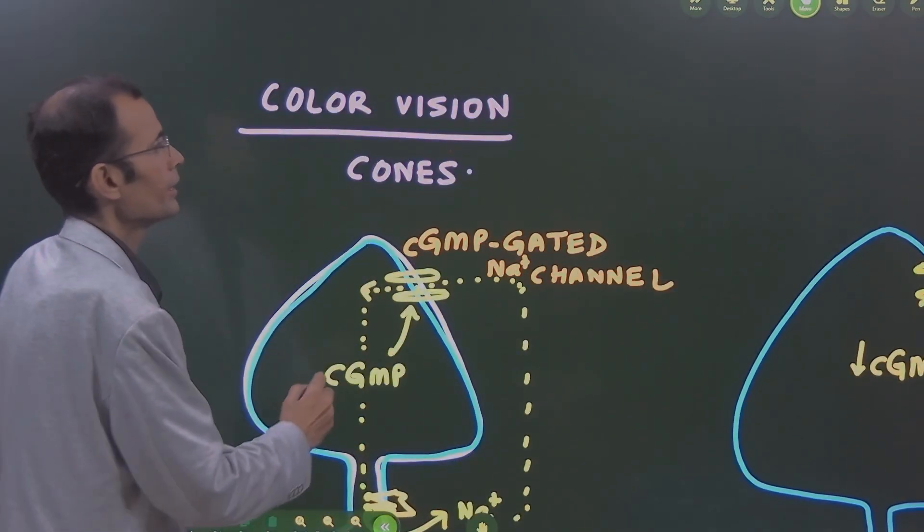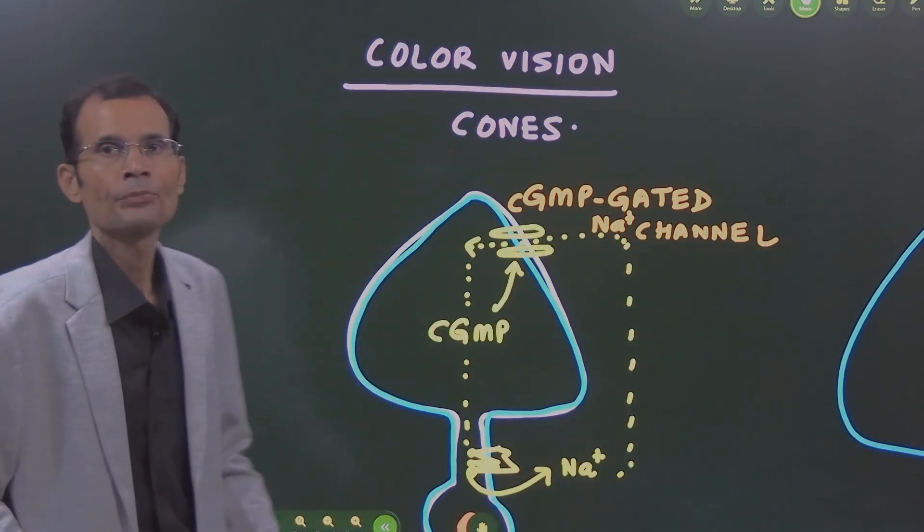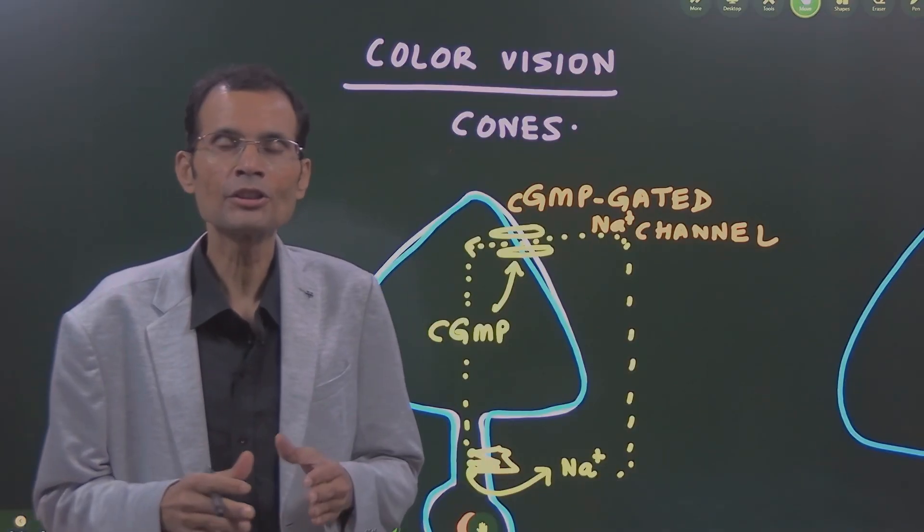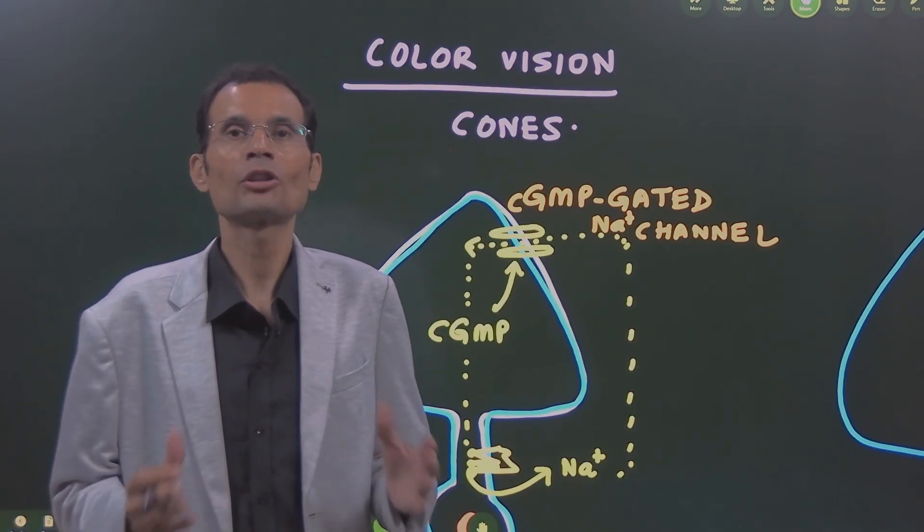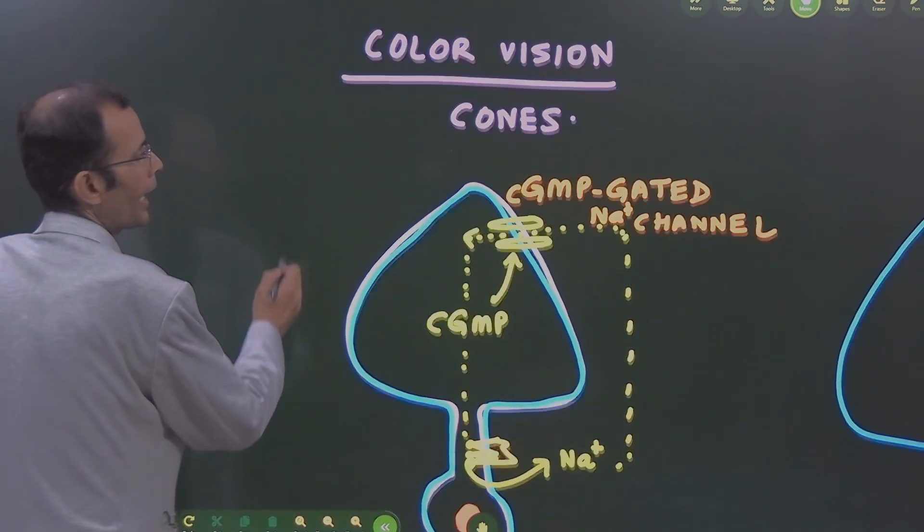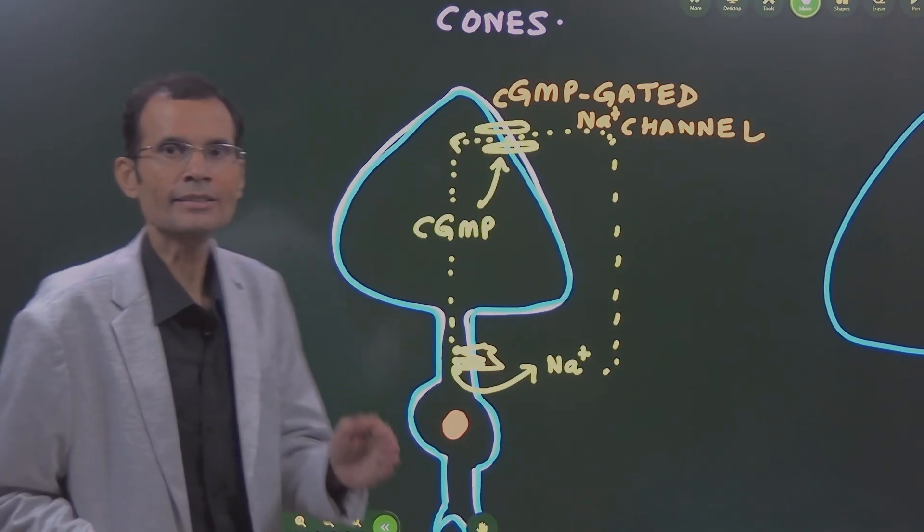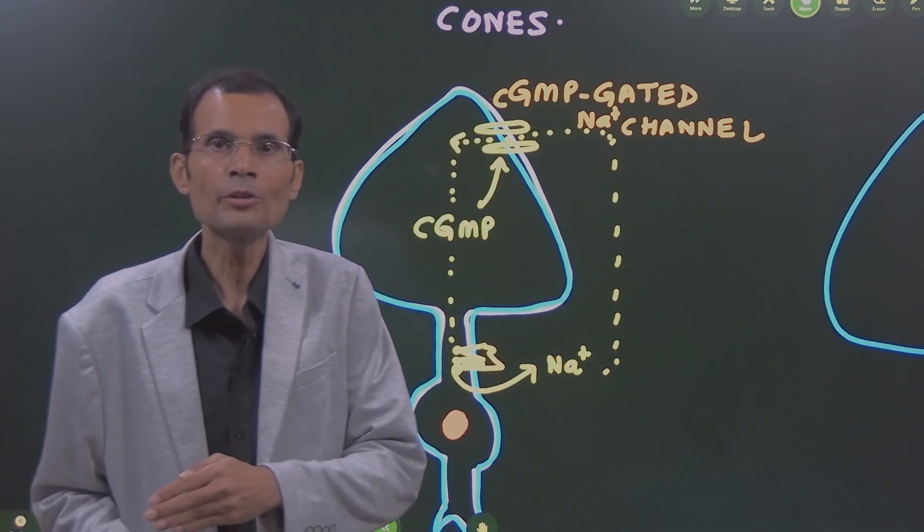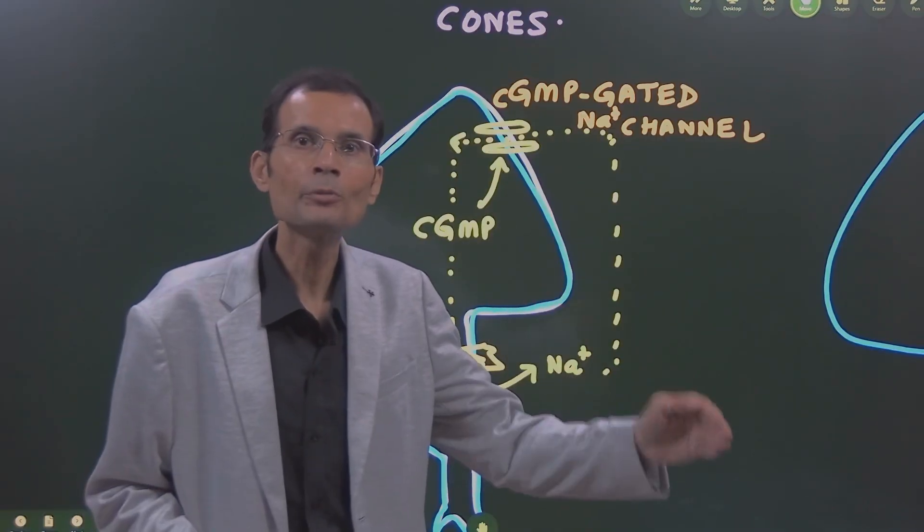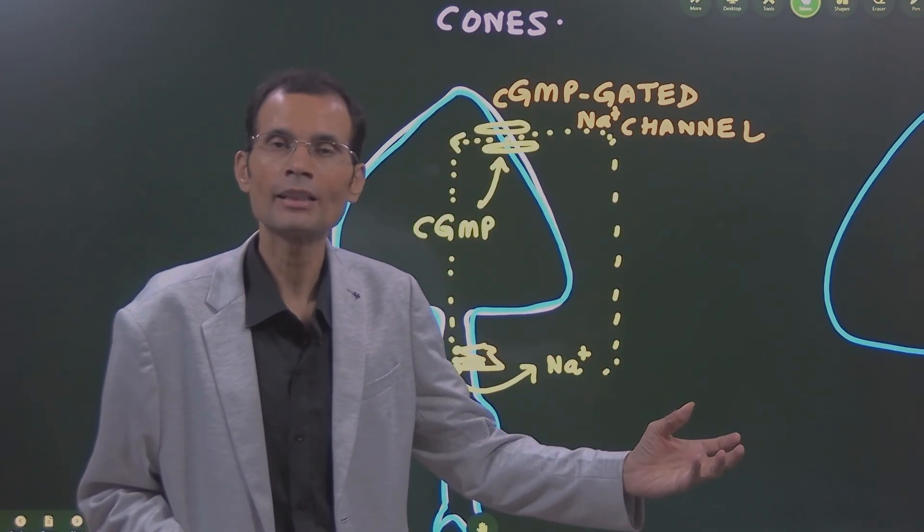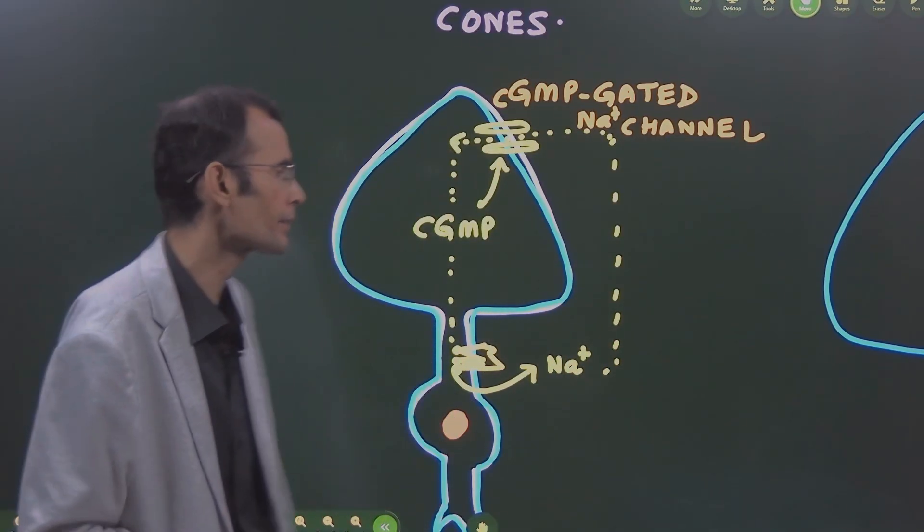Now let's see something about color vision. Color vision is by cones, as you all are probably aware. We need to understand an unstimulated cone and then the stimulated cone, and how the color is perceived.